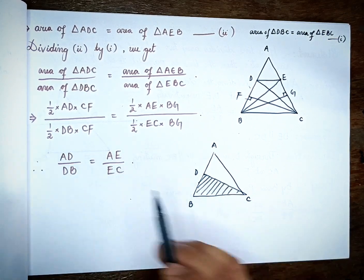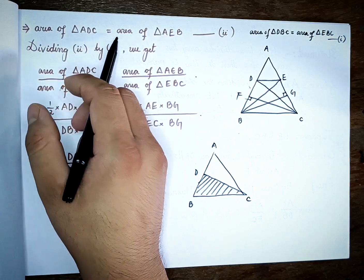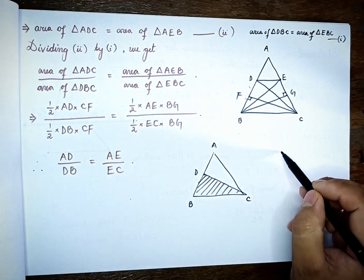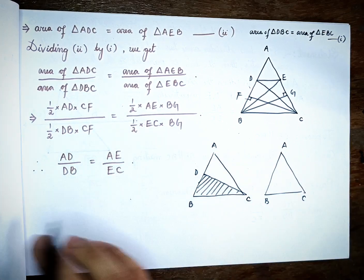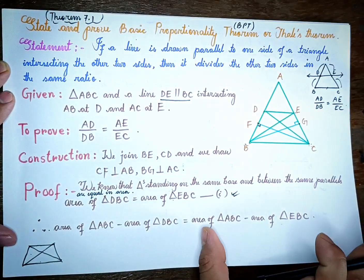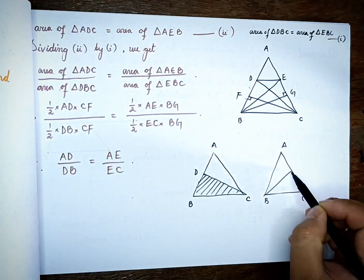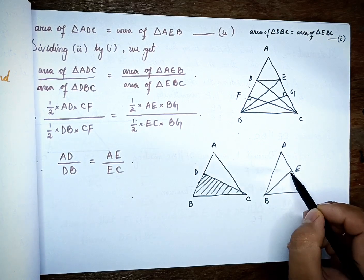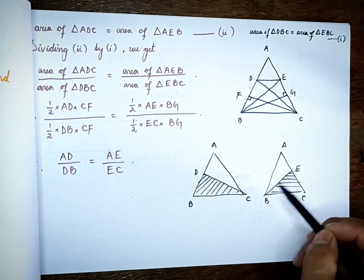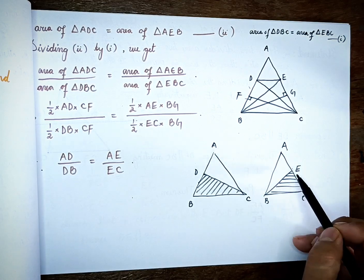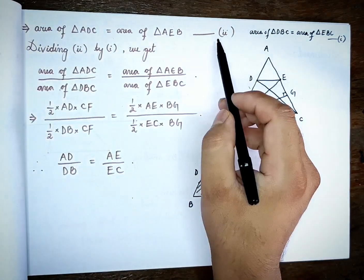Area of triangle ADC is formed. Area of triangle ABC on the table. Triangle EBC: area of triangle EBC is the same, so we have Equation 1 and Equation 2 set up for the area relationships.